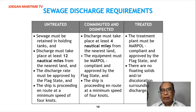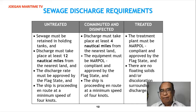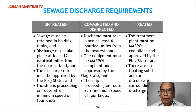For comminuted and disinfected sewage: discharge must take place at least four nautical miles from the nearest land, the equipment must be marked as compliant and approved by the flag state, and the ship must be proceeding en route at a minimum speed of four knots. For treated sewage: the treatment plant must be marked as compliant and approved by the flag state, and there must be no floating solids or discoloration of the surrounding water at the point of discharge.